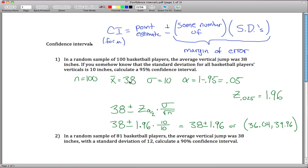Basically what I'm saying is, my best guess at how high basketball players can jump is 38 inches. That's my best guess for mu, but if I want to be 95% sure of what mu is, I don't want to just guess 38 because that's probably wrong. I want to say it's somewhere between this number, 36, and this number, 39.9. So this is my confidence interval.